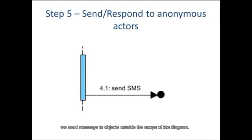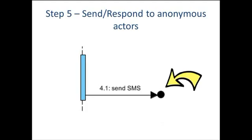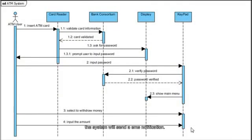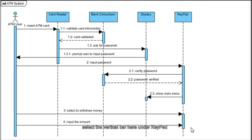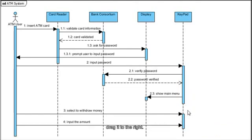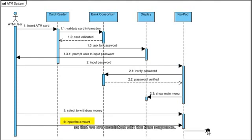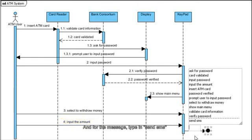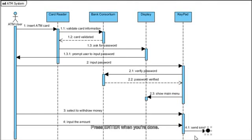In step 5, we send a message to objects outside the scope of the diagram. After the withdrawal, the system will send an SMS notification, but we're not concerned about the details of how to do that. Whenever we lack details or don't really care about the message receiver in the scope of the current diagram, we model it as a lost message. To draw it, select the vertical bar under Keypad and look for the icon that reads Lost Message. Drag it to the right and move down to a place below message number 4 to stay consistent with the time sequence. Release the mouse and type in Send SMS. We've just finished drawing the entire sequence diagram example.